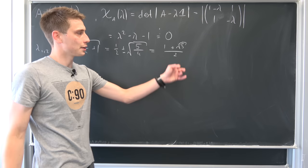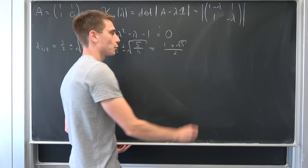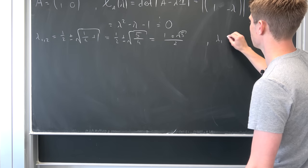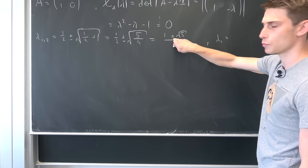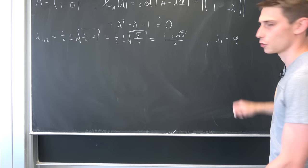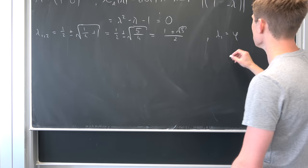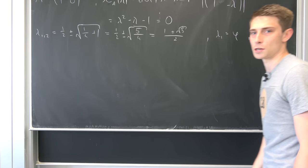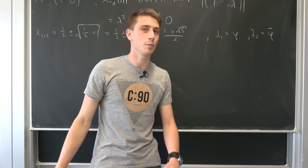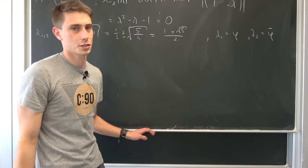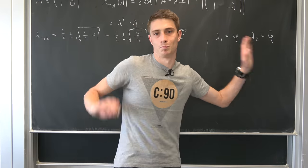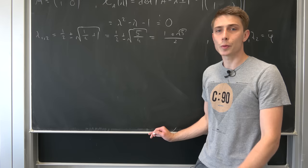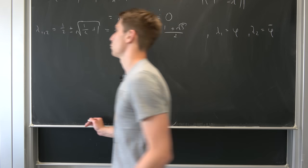Those are the eigenvalues, and those are two famous numbers. We are going to denote the first eigenvalue lambda_1 as the positive branch, which is going to be called phi, the golden ratio. And lambda_2 is the negative branch — it's phi's conjugate, or as 3Blue1Brown would say, phi's little brother.